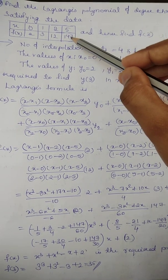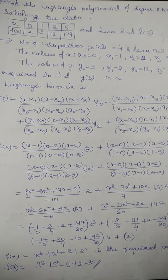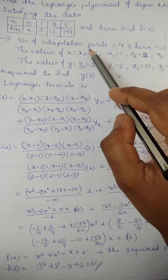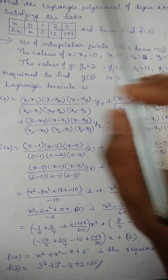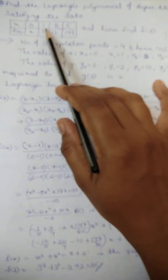The data is given. They ask to find f of 3, which means y at x equal to 3. Let us write first the given points. The number of interpolation points are how many? Four. 0, 1, 2, 3. So it will be 1, 2, 3, 4.